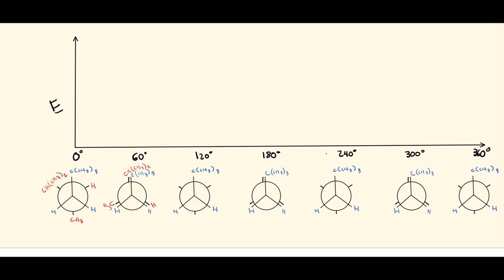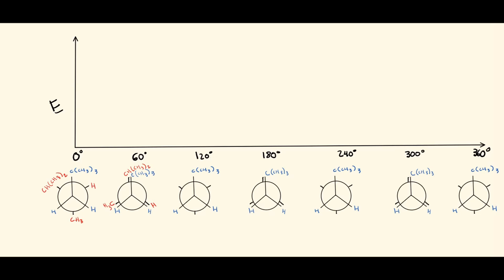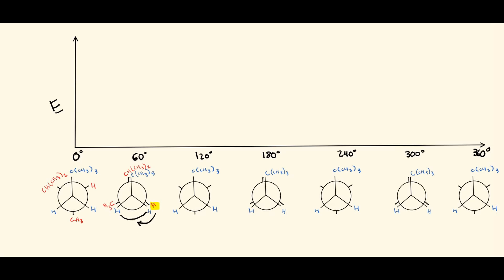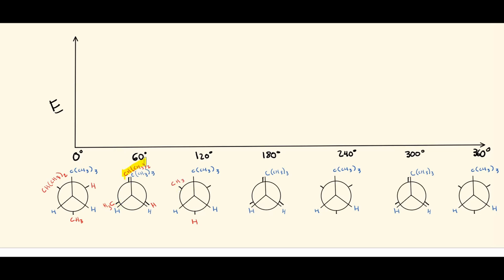Moving everything another 60 degrees puts us back to staggered at 120 degrees. The red hydrogen moves to 180 degrees, ending up between the two blue hydrogens. The methyl group also moves 60 degrees to its new position, and the isopropyl group moves 60 degrees to its new position as well.